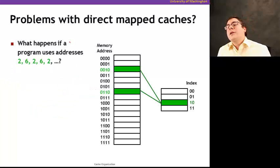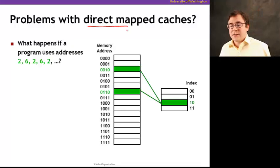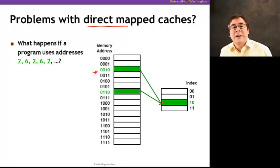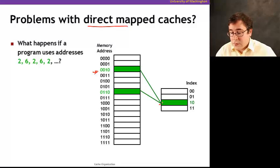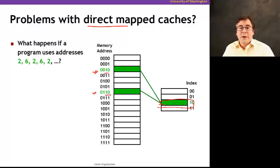Let me talk about one way of mapping data from memory to the cache. The example I gave earlier is what we call direct mapped caches. Direct map means that for each memory location, there's a single place in the cache where the data can go — that's why it's called direct map. For each memory location, you know exactly where it goes into the cache. Both of these addresses go to the same index because they have the same low-order bits.